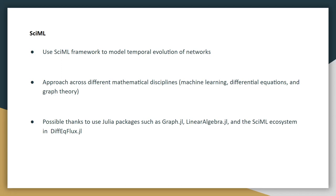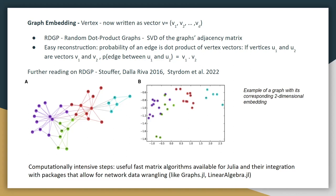So what we're trying to do is use the SciML, or scientific machine learning framework to model temporal evolution of networks. This is an approach taken across different mathematical disciplines, machine learning, differential equations, graph theory, and it's possible thanks to use of a number of Julia packages, most notable DiffEqFlux.jl, which contains the SciML ecosystem. And this has been very difficult to do in any other language other than Julia, thanks to Julia's great optimizations and the SciML framework that exists within it.